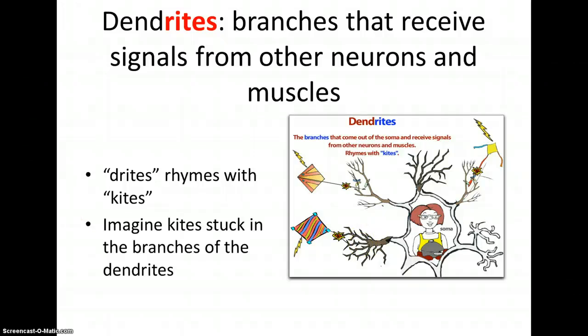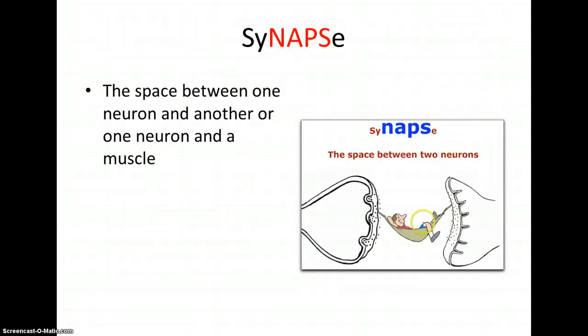These are the branches that receive signals from other neurons and muscles and then the synapse is the connection. We have an axon terminal here on one end of a neuron and then we have the dendrite receiving the signal across the synapse. A way to remember synapse you can think of there's the word naps inside of synapse. So the space between two neurons you can take a nap there. It's a very very tiny space.